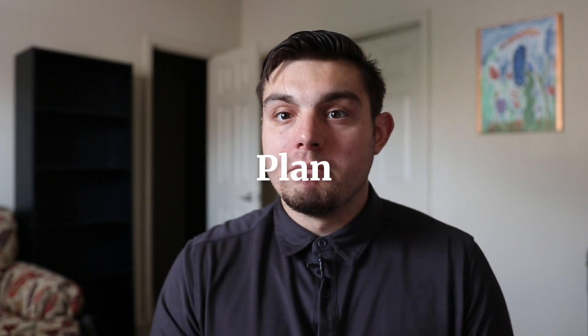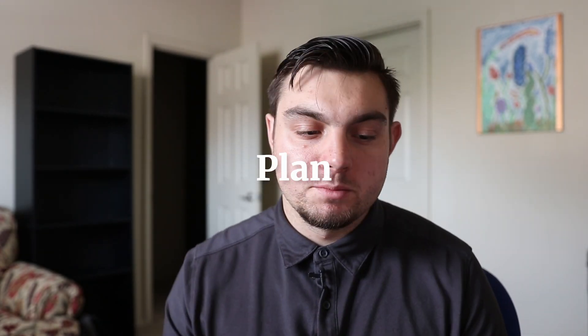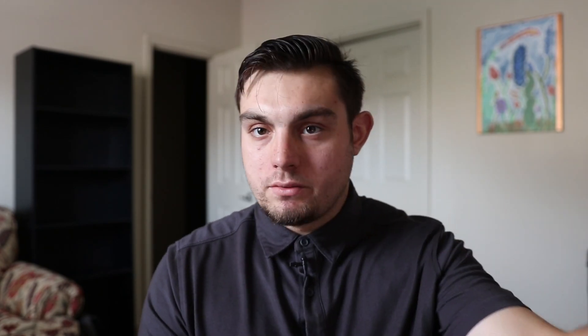The last component is a plan. You can have a system that helps you do all these things, but if you're not saying where you want to go with all this activity, then what is the point? A plan is a direction for all of the activity — what are you moving toward? I really like Cal Newport's multi-scale planning idea, where you have a plan for different time scales: annual, quarterly, weekly. Each week you rewrite the week plan based on the quarter plan, which is informed by the year plan. You can even go into decade-level epochs.